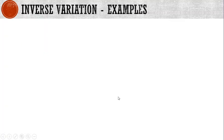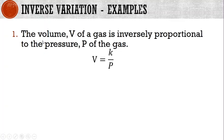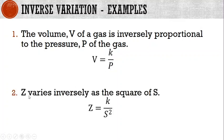For inverse variation example one, the volume v of a gas is inversely proportional to the pressure p of the gas, so v equals k divided by p. In example two, z varies inversely as the square of s, so z equals k divided by s raised to the power of 2.